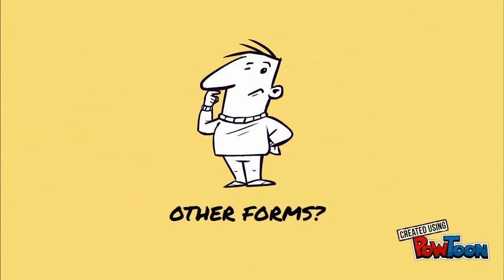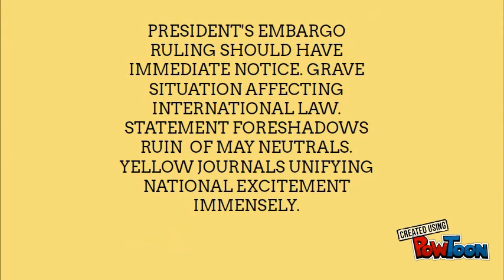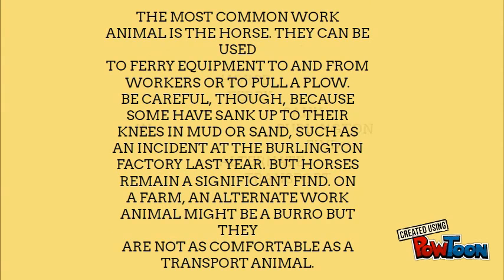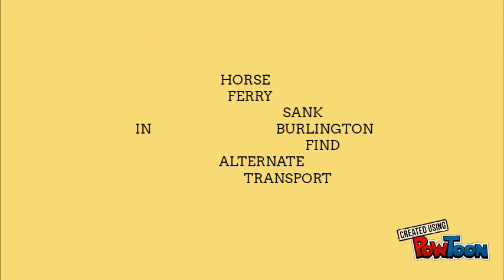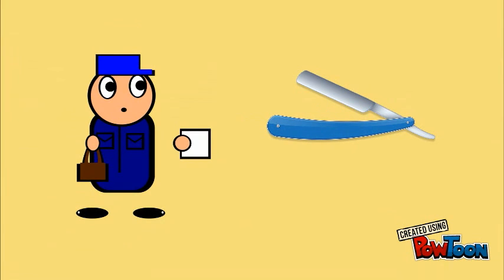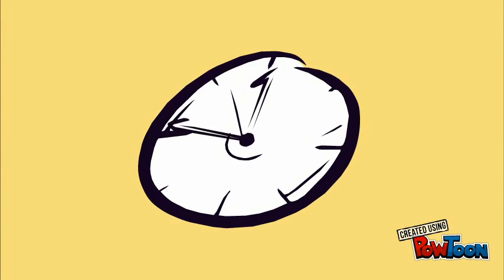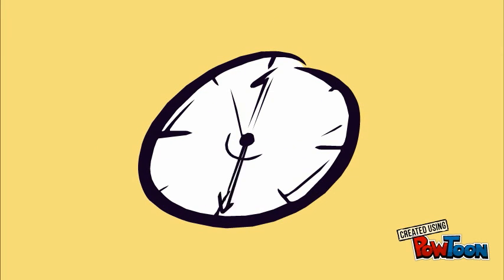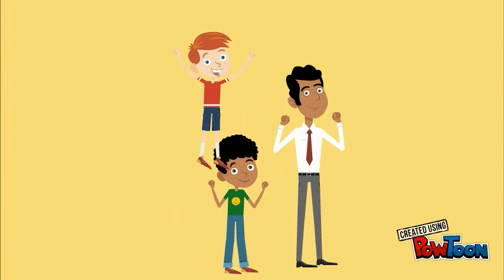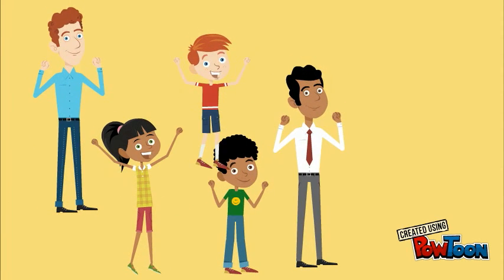Other forms of steganography include the Null cipher, which hides the message in the first letter or any other fixed letter in a block of text, using a template like a piece of paper with holes cut in it. And one of the oldest steganography schemes — which is my personal favourite — was to shave the head of a messenger, tattoo the message on his head, then wait for his hair to grow back and send the messenger to its recipient, where the messenger's head is shaved again and the message is received. Effective? Yes. Ethical? Up for debate.